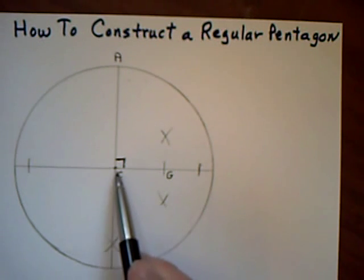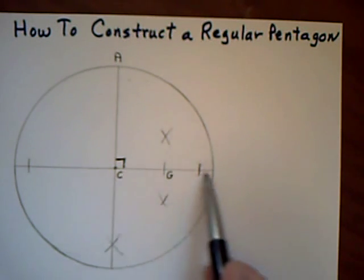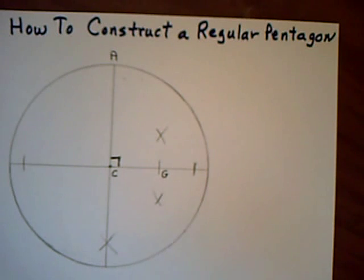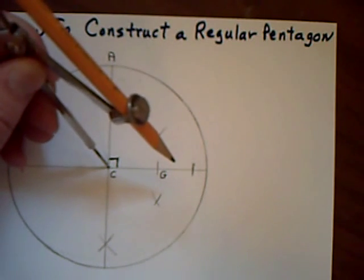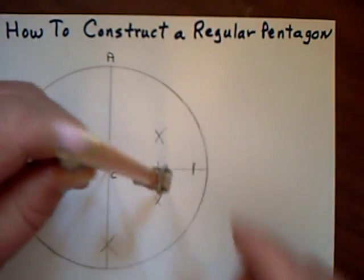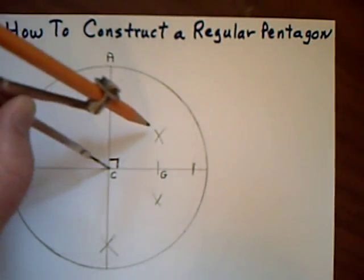The next thing I do is I go from here to here on the radius, and I bisect it. So to do that, I use my perpendicular bisector construction again. I put my compass at C, and I do an arc below and an arc above.